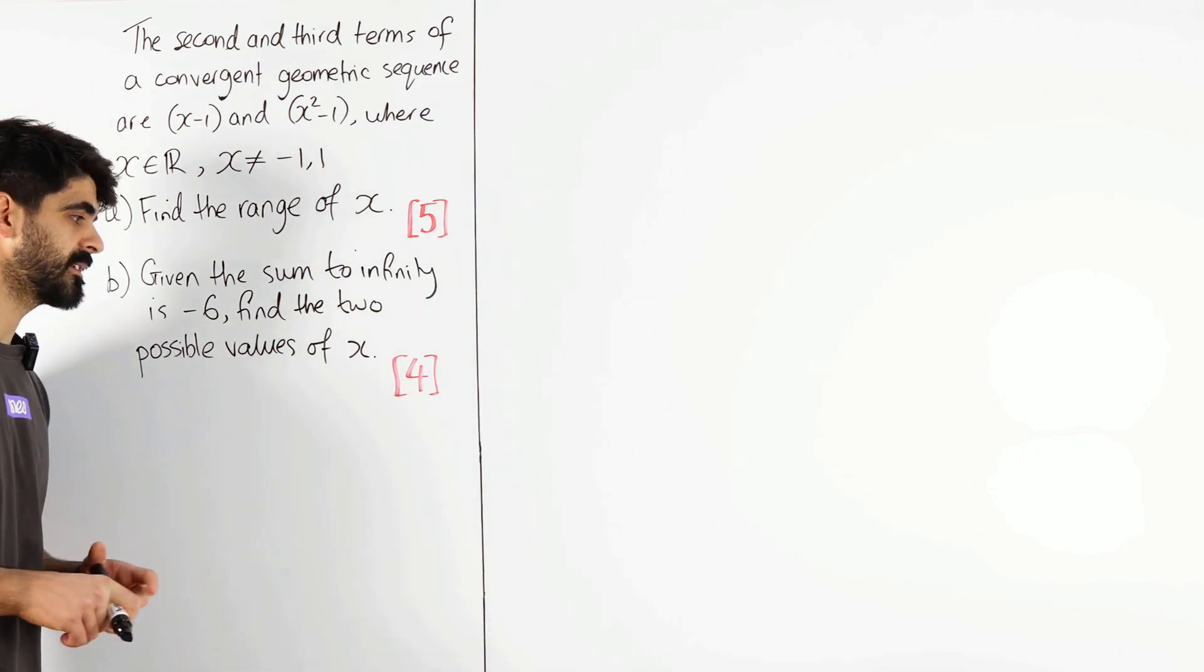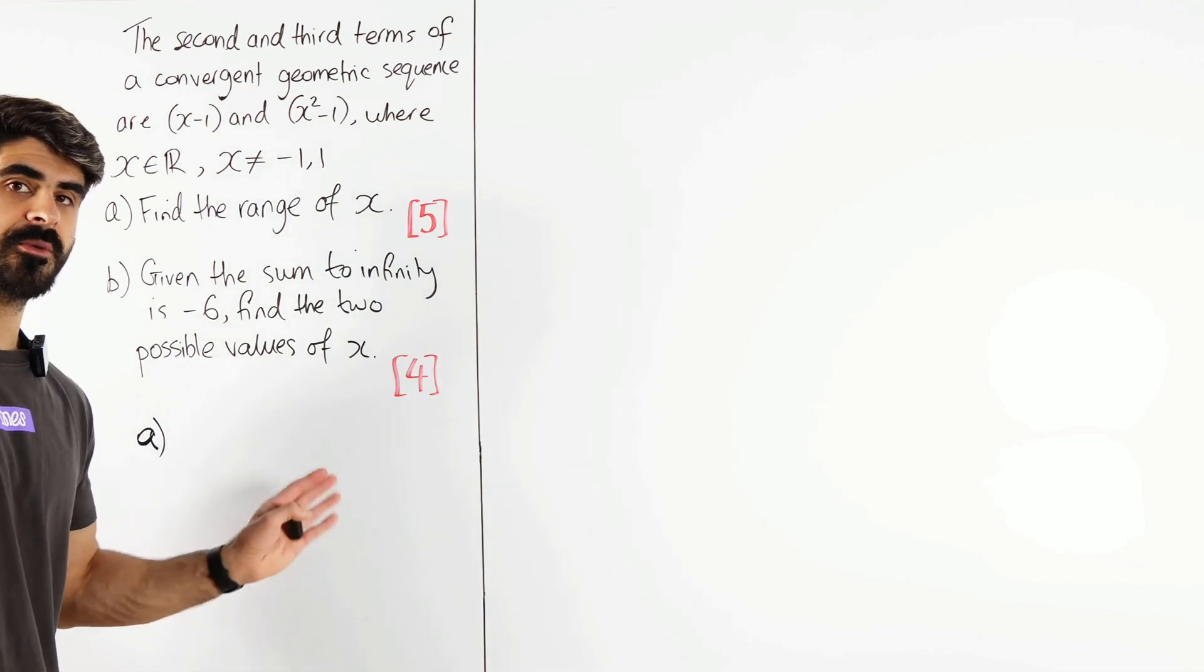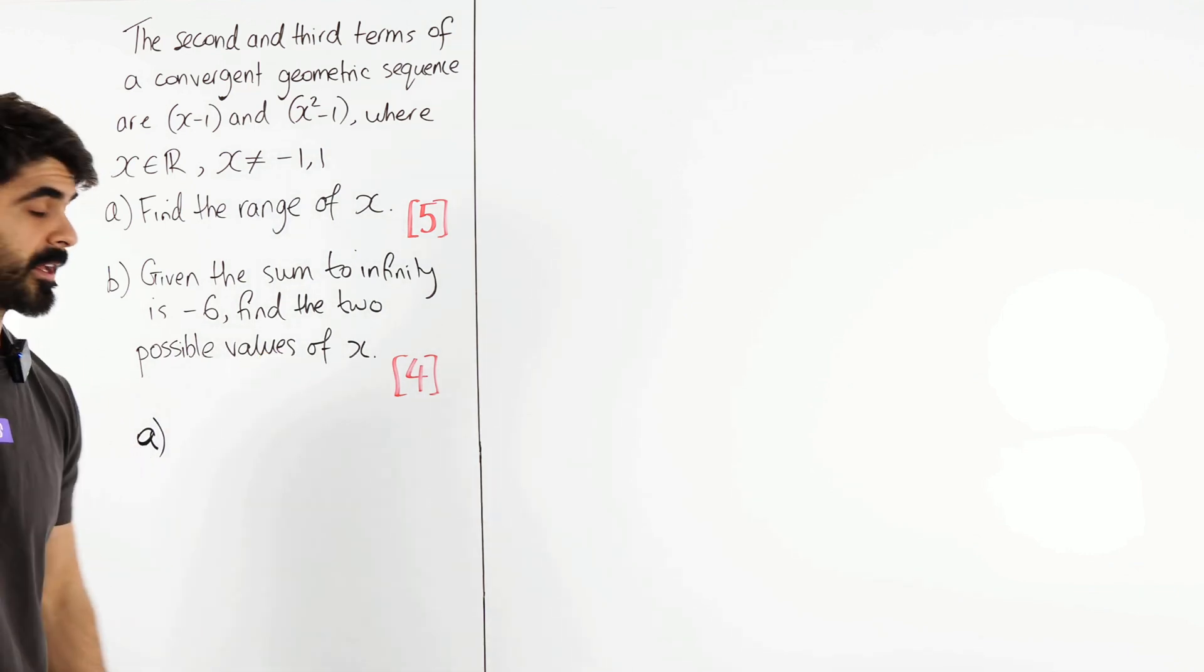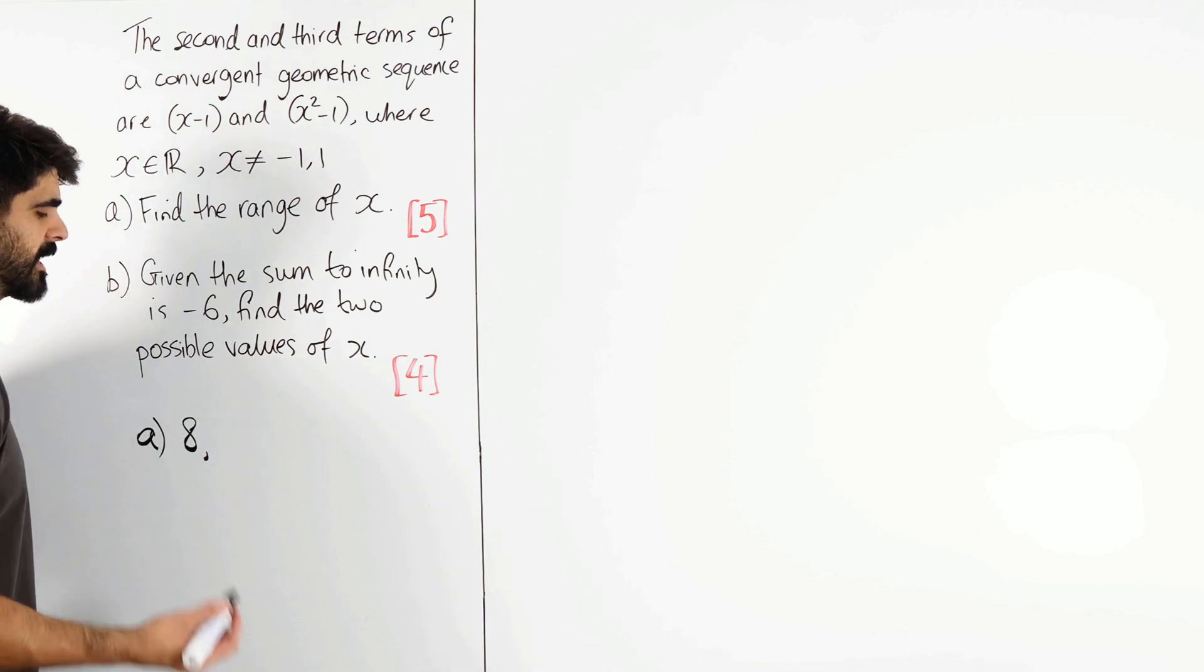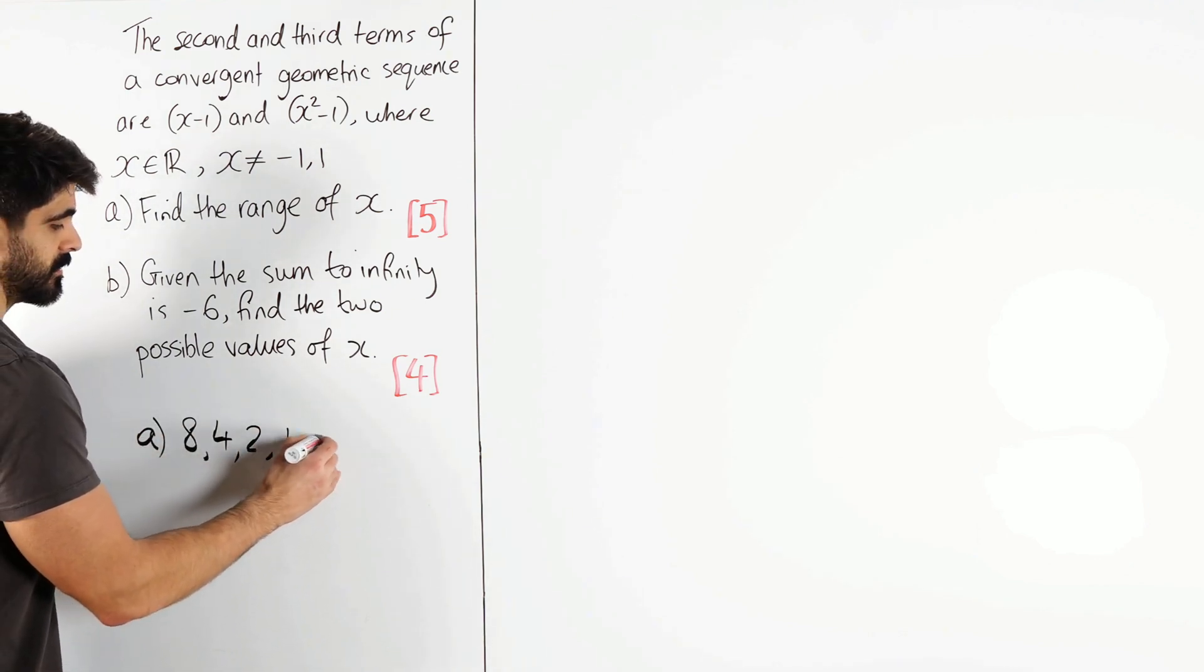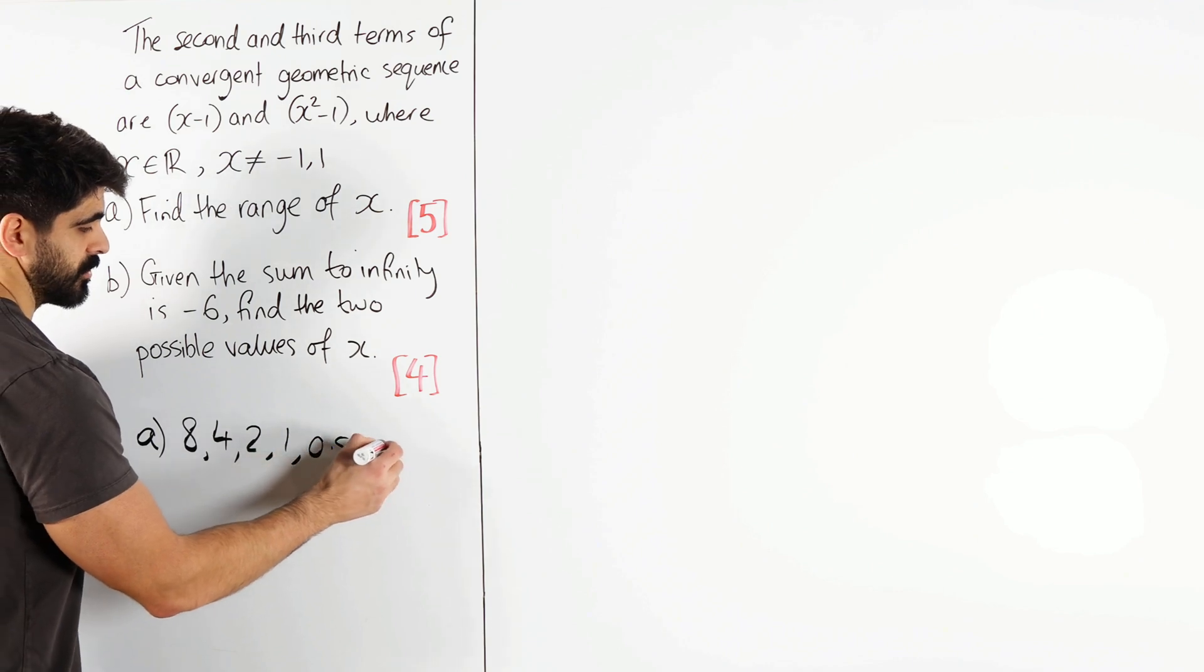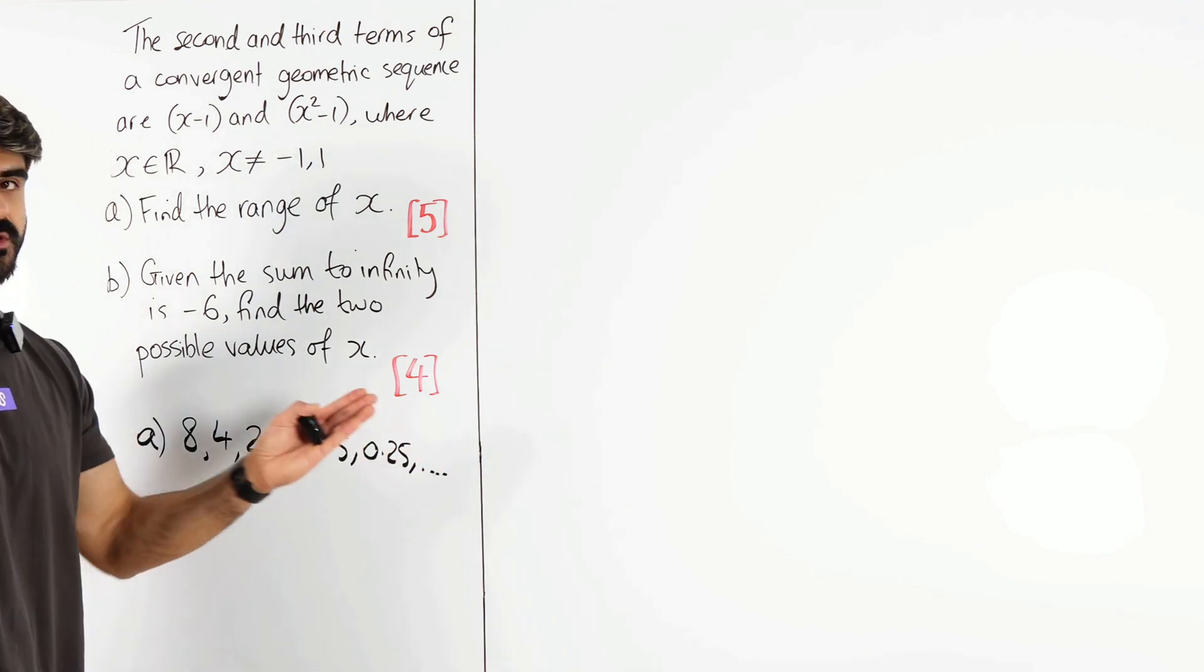So what does it mean that it is a convergent sequence? A convergent sequence is a sequence whereby the consecutive numbers are clearly going towards something. For example, if I had 8 and I just kept halving it: 8, 4, 2, 1, a half, 0.25, etc. You can see it's going towards 0.